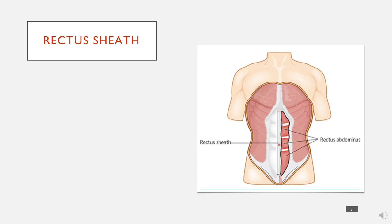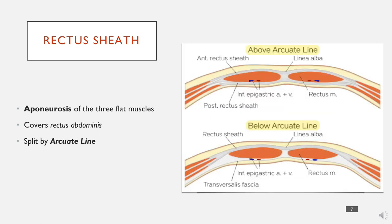The rectus sheath is this white structure we can see here, and it covers the rectus abdominis. It's an aponeurosis of the three flat muscles that come together to cover the rectus. It's split by the arcuate line. Above this point, the rectus sheath covers both the front and back of the rectus abdominis muscle, but below the arcuate line it only covers the front, and on the back you go straight onto the transversalis fascia.